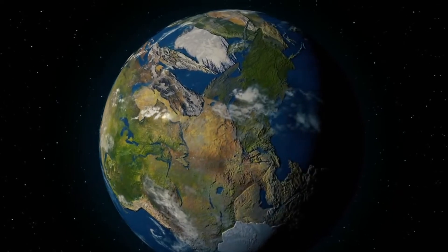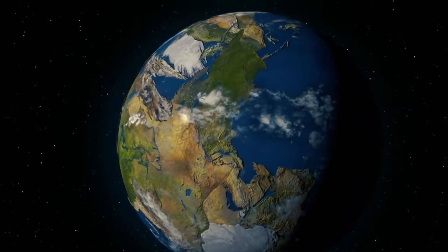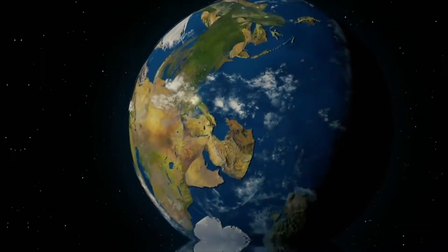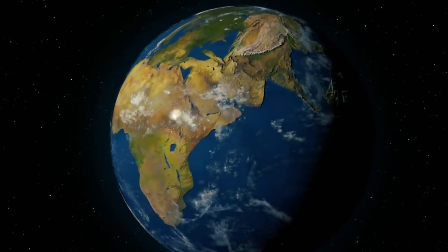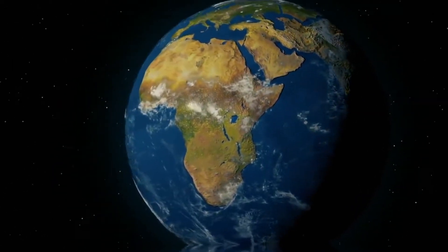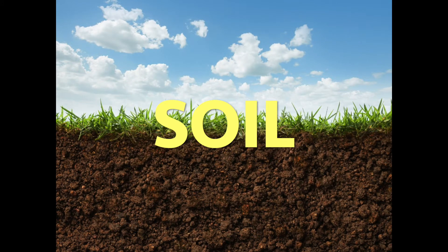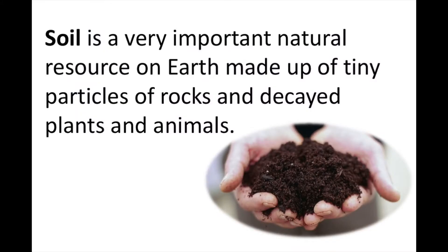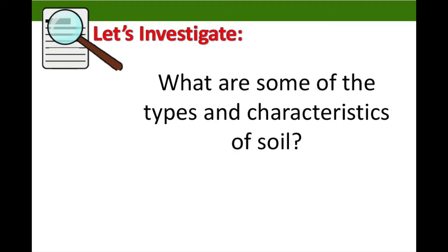It forms at the surface of land. It is the skin of the earth. It is capable of supporting plant life and is vital to life on earth. Have you guessed what it is? Soil is a very important natural resource on earth. It is a complex mixture of rocks, minerals, water, air, organic matter, and countless organisms that are decaying remains of once-living things. In today's lesson, we will be investigating the characteristics and the types of soil that is good for planting.